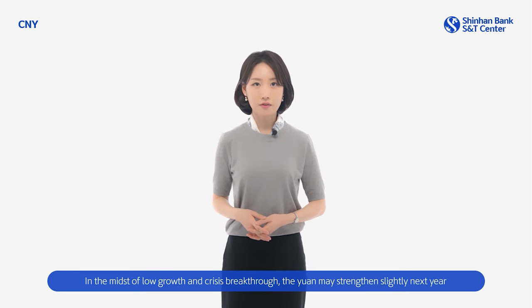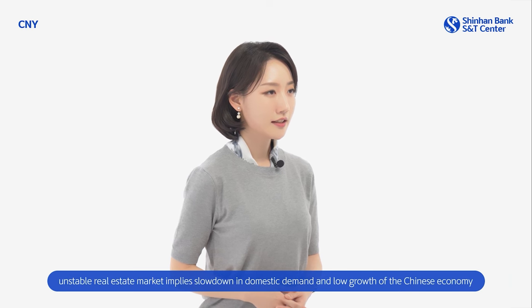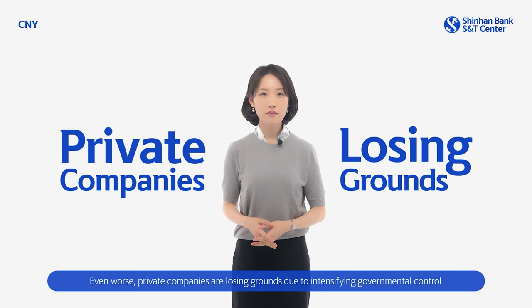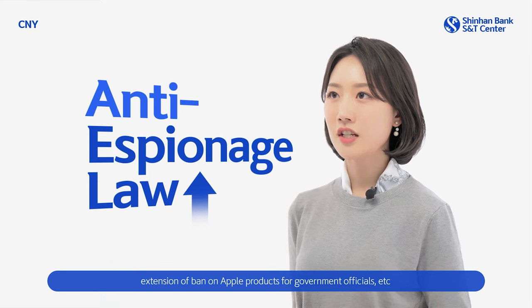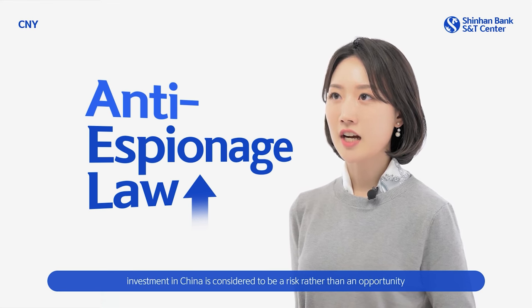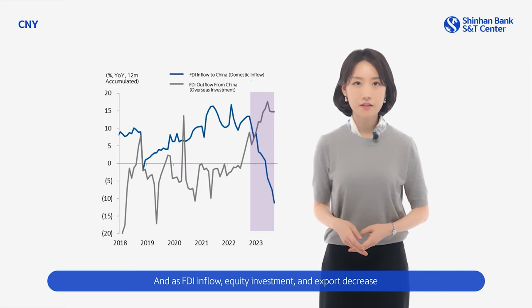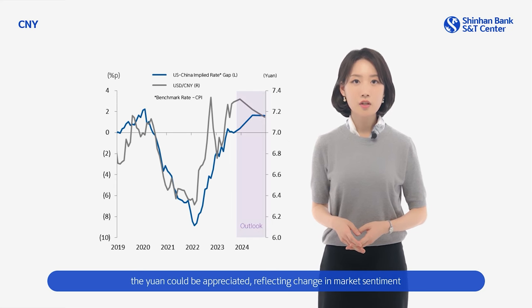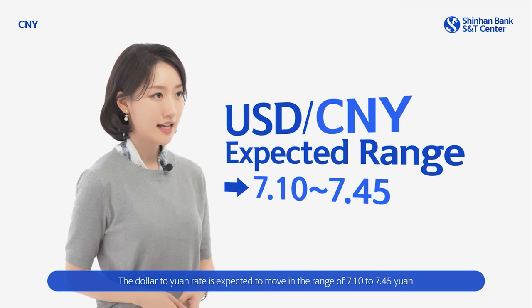In the midst of low growth and crisis breakthrough, the yuan may strengthen slightly next year. While China dominates the electric automobile ecosystem, the unstable real estate market implies a slowdown in domestic demand and low growth of the Chinese economy. Private companies are losing ground due to intensifying government control. Due to nationalistic measures including the enhancement of the anti-espionage law and the extension of the ban on Apple products for government officials, investment in China is considered to be a risk rather than an opportunity. As FDI inflow, equity investment, and exports decrease, a sudden reversal of the weakening of the yuan seems difficult. But while the Fed is attempting to change its policy stance, the yuan could be appreciated reflecting change in market sentiment, depending on how the U.S. presidential election unfolds. The dollar-to-yuan rate is expected to move in the range of 7.10 to 7.45.